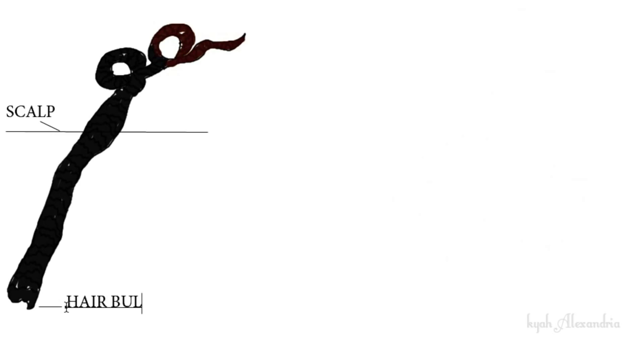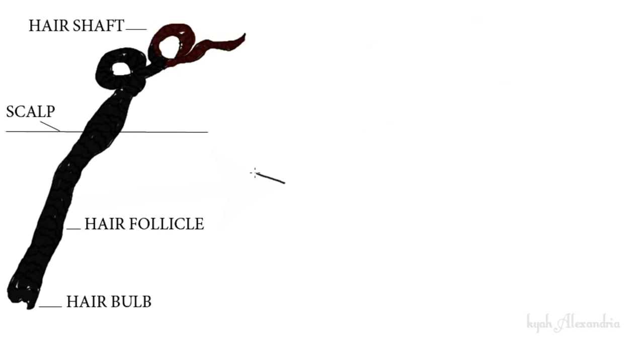A disulfide bond, excess bond, or disulfide bridge — all the same thing — is a sulfur-to-sulfur bond linking the sulfur atoms of two polypeptide chains.